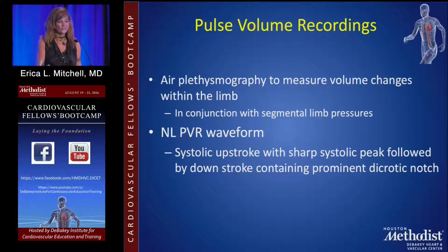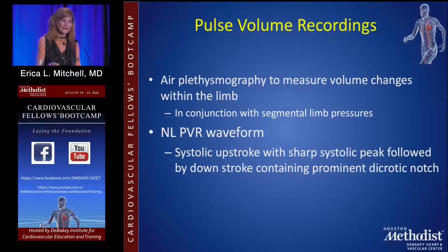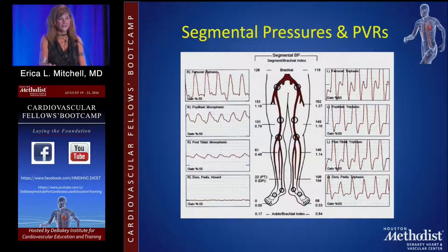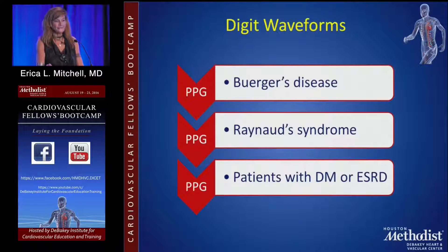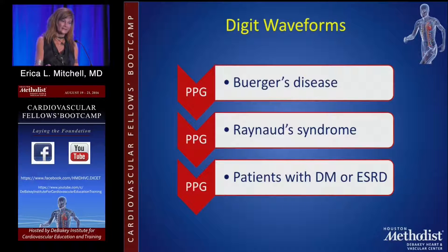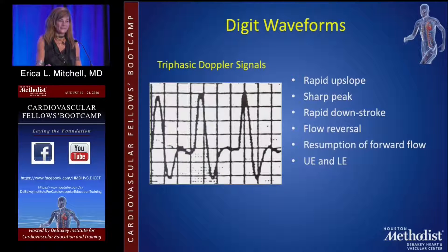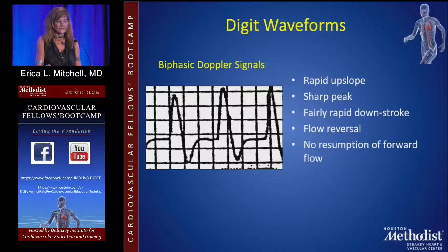Pulse volume recordings are essentially air plethysmography and measure volume changes in the limb. The waveform should have a normal systolic upstroke with a short systolic peak followed by a downstroke and a prominent dicrotic notch. You can obtain information from both pressures and waveforms. Digital waveforms are used for patients with small vessel disease such as Buerger's disease, Raynaud's, diabetes, and end-stage renal disease. A triphasic signal correlates with a normal waveform; greater disease causes progressive blunting of the waveform.